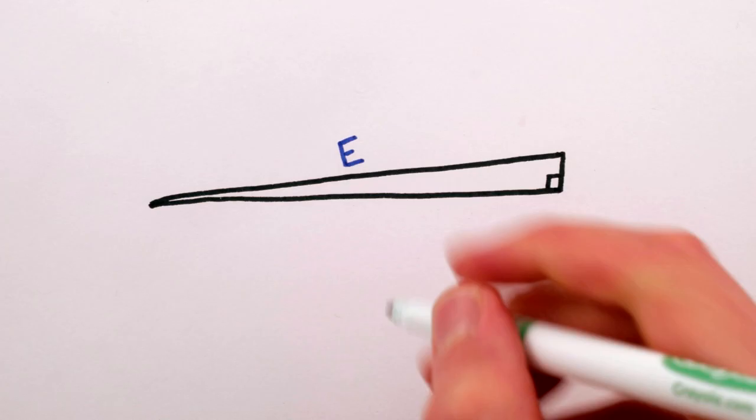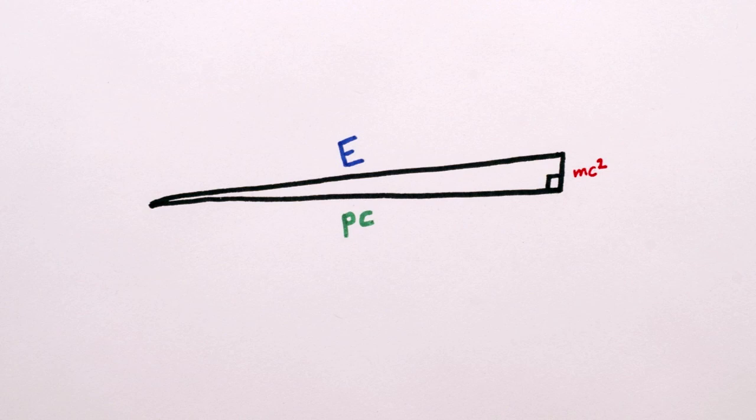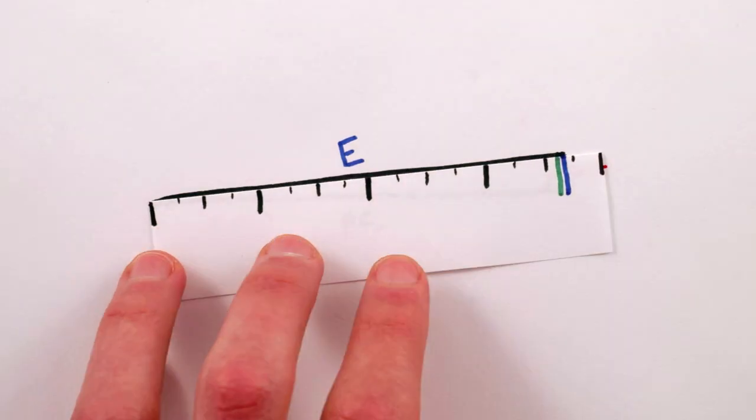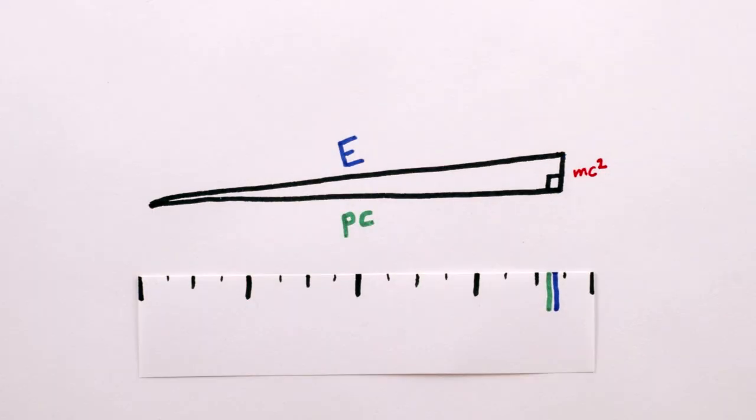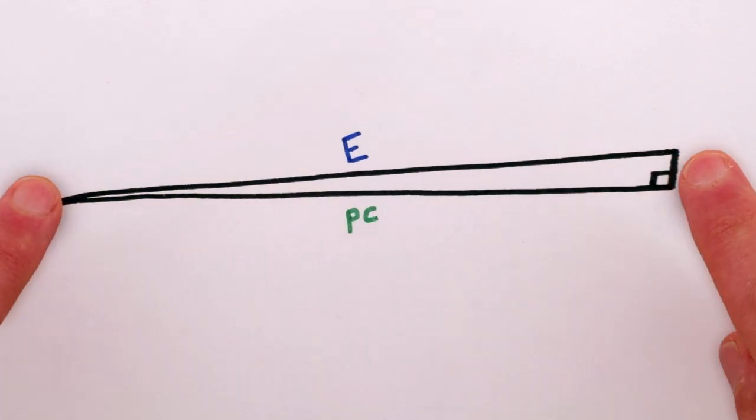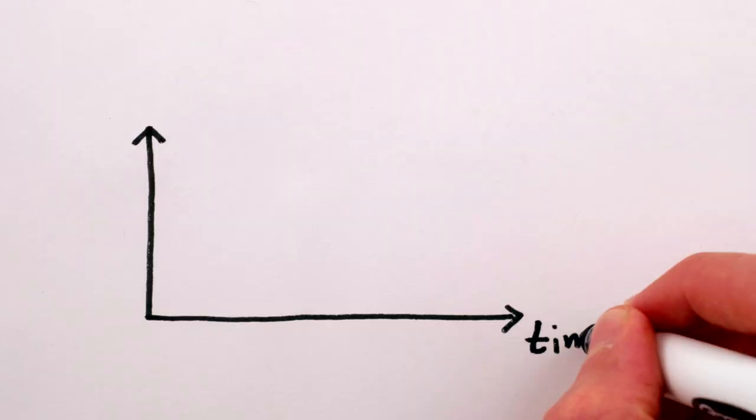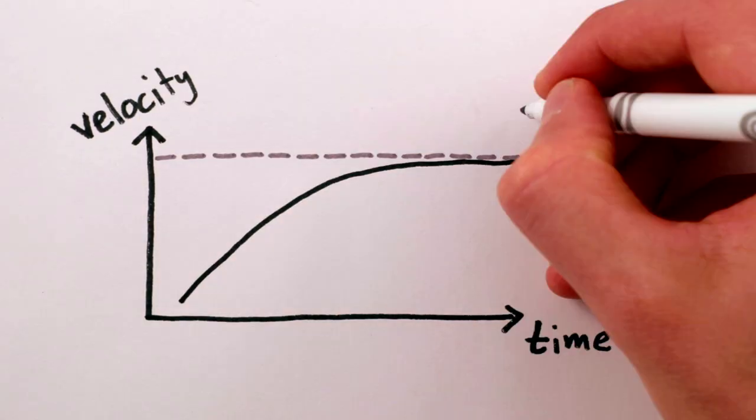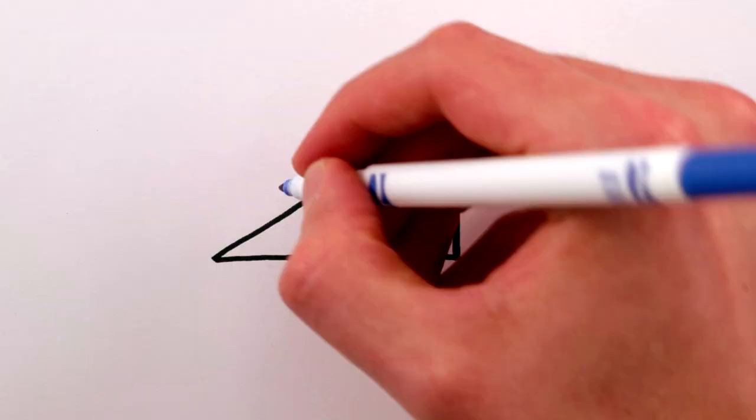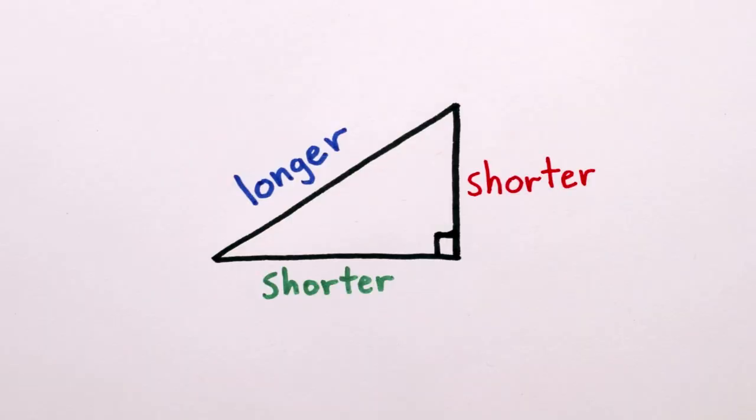But because of that tiny little bit of mass, the momentum side of the triangle will always be a little bit smaller than the energy side. No matter how hard you try to increase your momentum, it never quite gets to the point where p times c equals your energy, and thus your velocity can never quite reach the speed of light, all because the hypotenuse of a right triangle is longer than its legs.